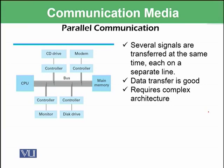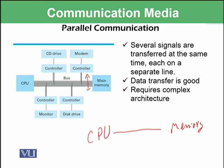In parallel communication, several signals are transferred at the same time, each on a separate line. For example, we have a bus that has a number of wires available, and on each wire we can send multiple signals. Suppose there is only one wire available between CPU and memory — in such a situation, it would be very difficult to communicate because the data would have to wait a very long time.